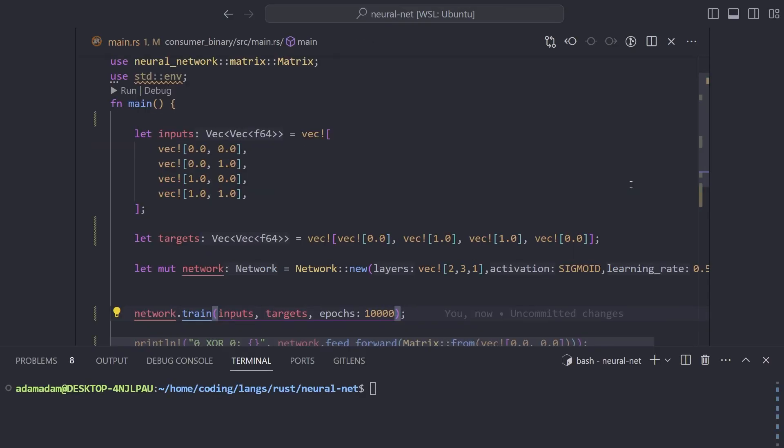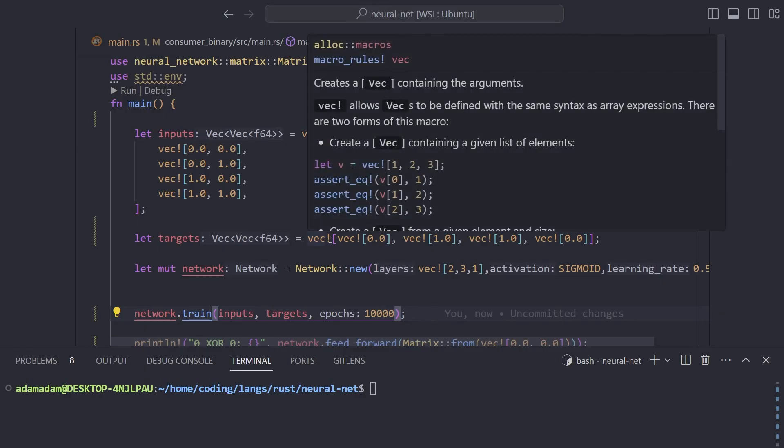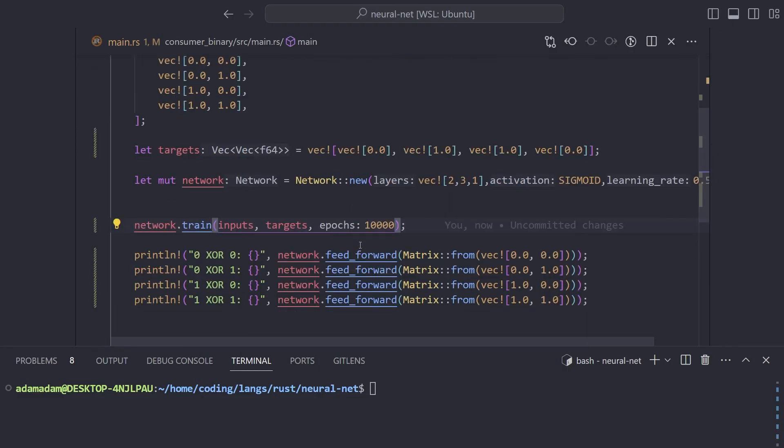We've finally completed our neural network. As you can see, we're going to test it out with a simple problem called the XOR. Here we have our inputs. Here we've got our target outputs that we want to match, and we're setting up our neural network. We've given it two input layers, three hidden layers, and a final output layer, and we're also using the sigmoid activation function. We're training our network 10,000 times, and if it all goes well, it should predict our XOR problem perfectly.